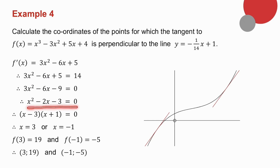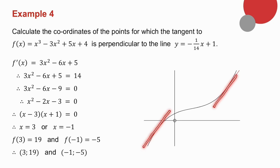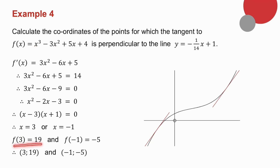I set up my trinomial and get two values for x. On the cubic graph, where is the gradient 14? There and there — two values for x. But the question asked for the coordinates of the points, not just the x values. So when x is 3, I substitute 3 into f of x and get f of 3 equals 19. When x is minus 1, I substitute minus 1 and get f of minus 1 equals minus 5. So there I have the coordinates of the two points where the gradient is 14.